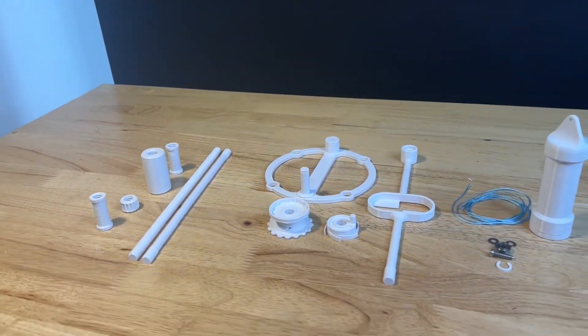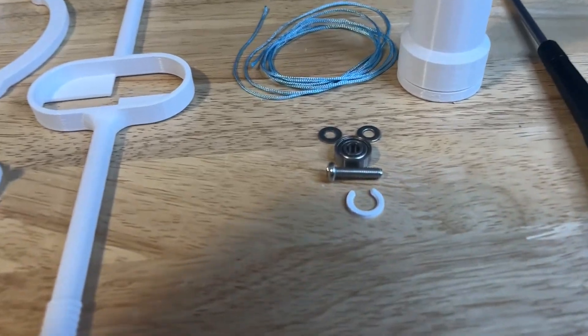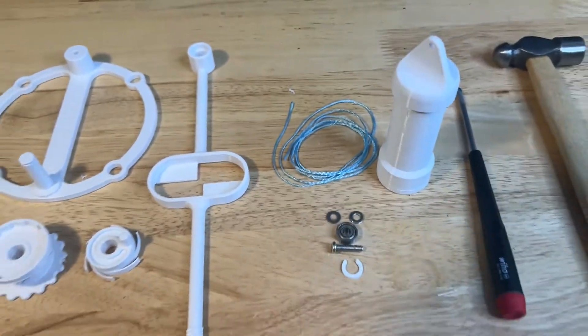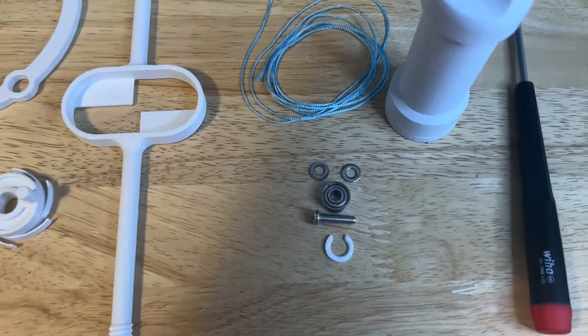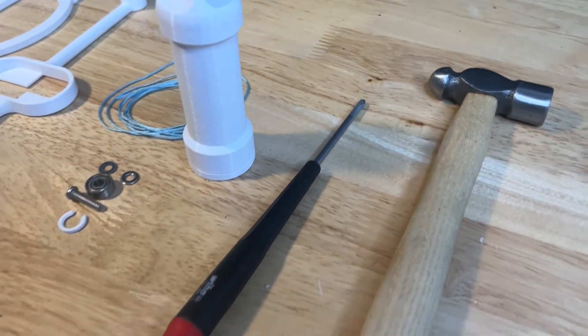If you haven't yet, get those files printed. You will need some additional parts to assemble this escapement, the full parts list is included in the download package. You will also be needing a screwdriver and a hammer.